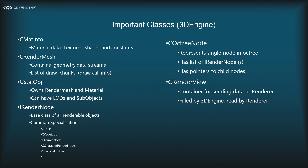Now we know how the threading model works and how the 3D engine interacts with the renderer. Let's dig deeper into the 3D engine and look at the actual classes. The most important ones you'll likely encounter: the CMaterialInfo class, which represents material data — everything needed to render a material, including a set of textures, a shader, a shader technique, and shader constants.